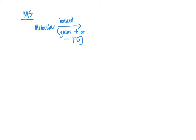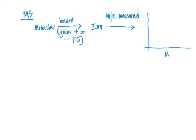After the molecule is ionized to form an ion, the mass-to-charge ratio of that ion is going to be measured, resulting in a mass spectrum. The x-axis shows the mass-to-charge ratio and the y-axis shows the intensity of the signal. M over Z refers to the mass-to-charge ratio, where M is the mass and Z is the charge.